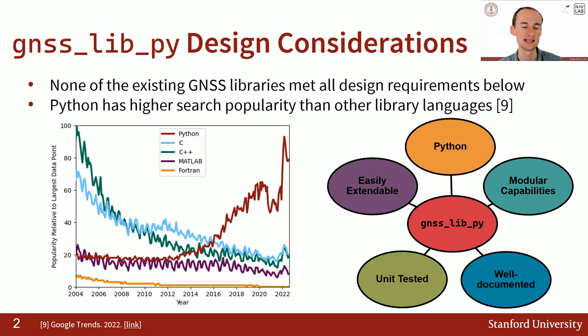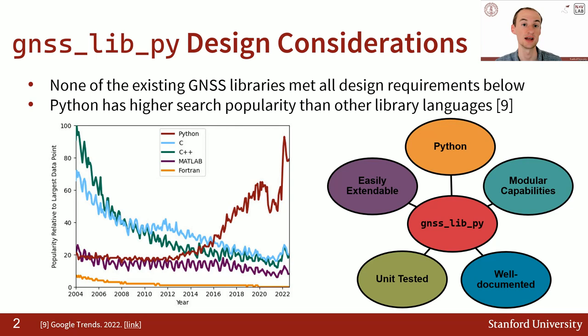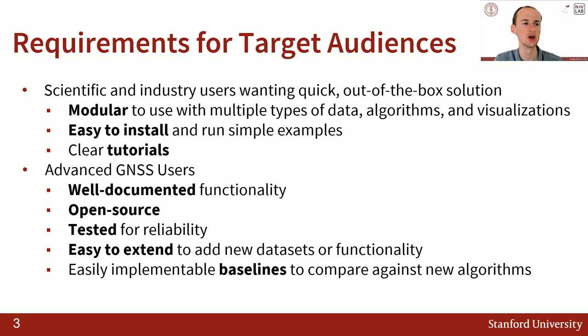We wanted it to be well documented. Especially in academia, this was critical for us with students coming and going. We wanted there to be clear references and citations in the source code itself so that it is clear where every algorithm is coming from. We wanted it to be unit tested, meaning tests for each function of the library to make sure that you have reliability and confidence that it works as expected. And we wanted it to be easily extendable, meaning easy to add and implement future state-of-the-art algorithms into the Python library.